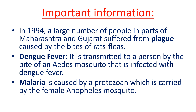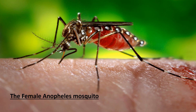In 1994, a large number of people in parts of Maharashtra and Gujarat suffered from plague caused by the bites of rat fleas. Dengue fever is transmitted by the bite of an Aedes mosquito infected with dengue fever. Malaria is caused by a protozoan carried by the female Anopheles mosquito — you can see a picture of the female Anopheles mosquito here.